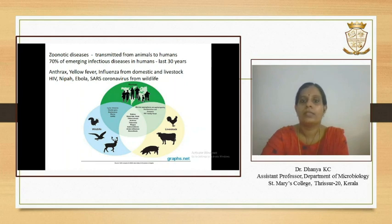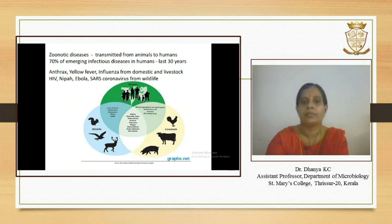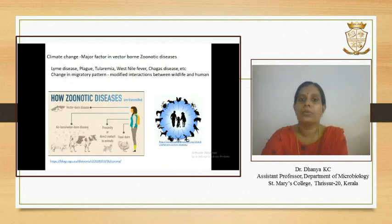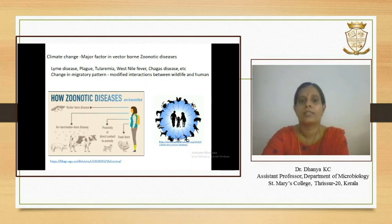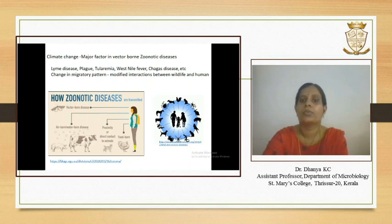Among the many factors that lead to the emergence of vector-borne zoonotic diseases, the major one is climatic change. Due to climate change, there has been a rise in the distances species typically migrate, and these changes in migratory patterns have resulted in modified interactions between wildlife and humans. These changes in climates and ecotones play a crucial role in regulating the emergence and re-emergence of zoonotic diseases.